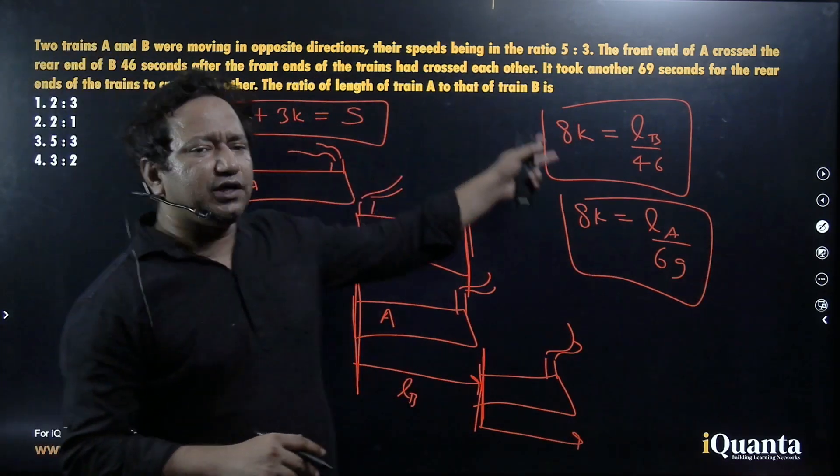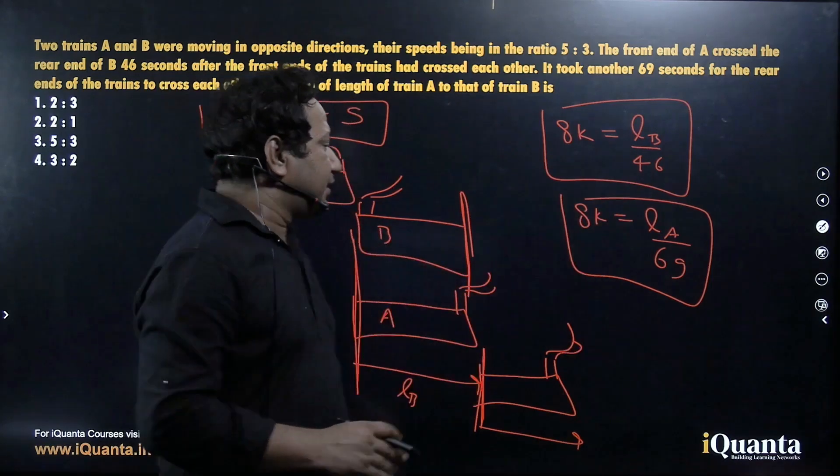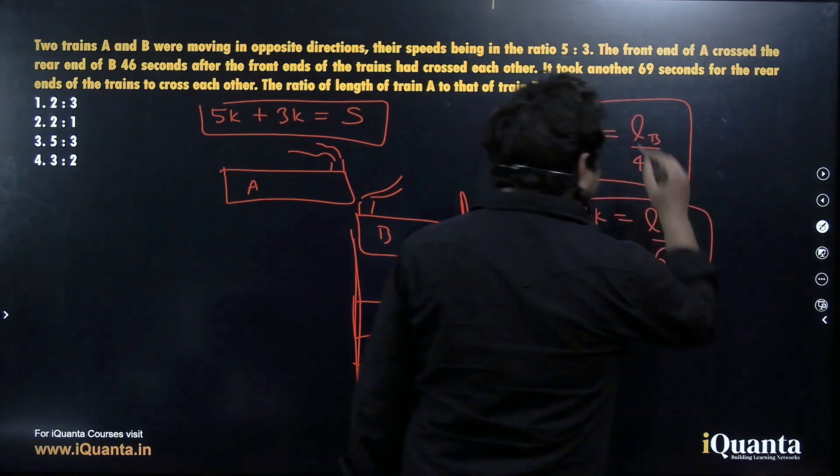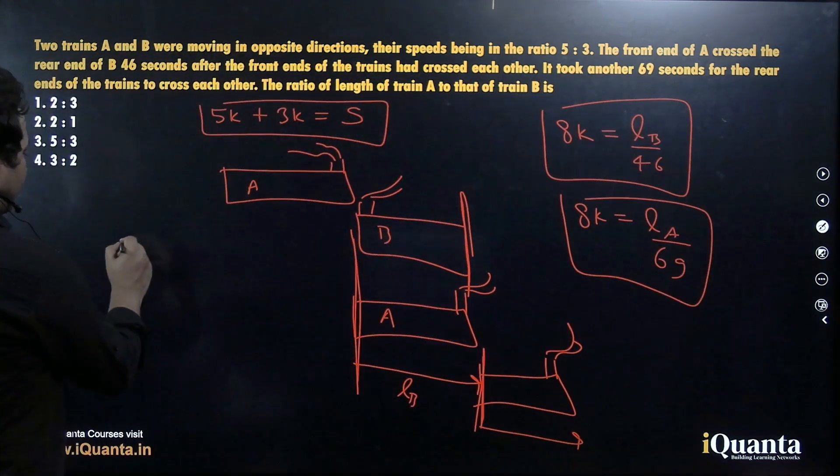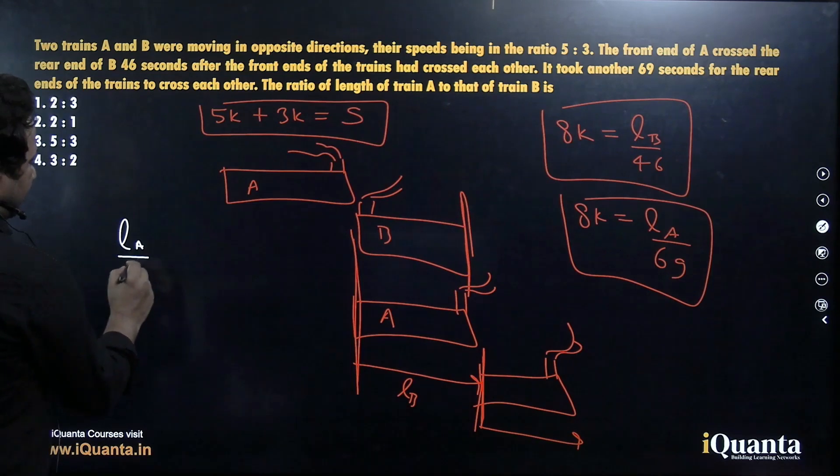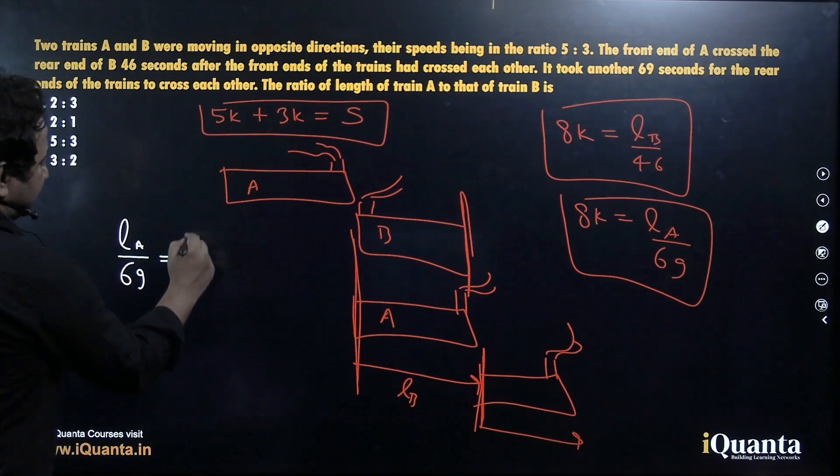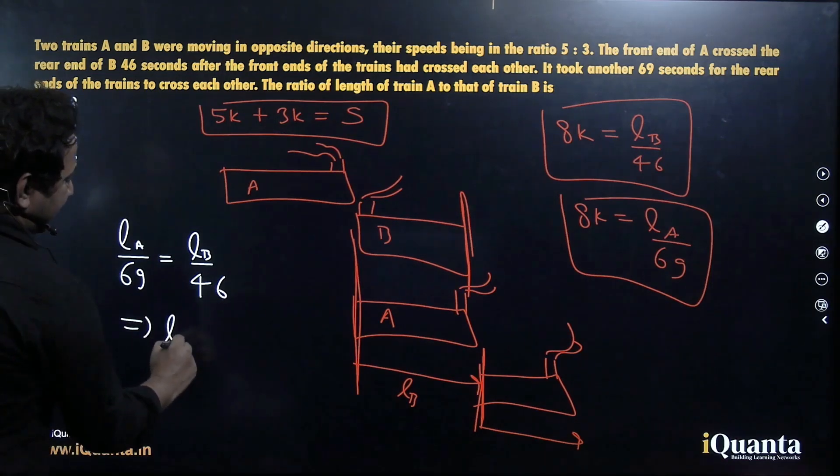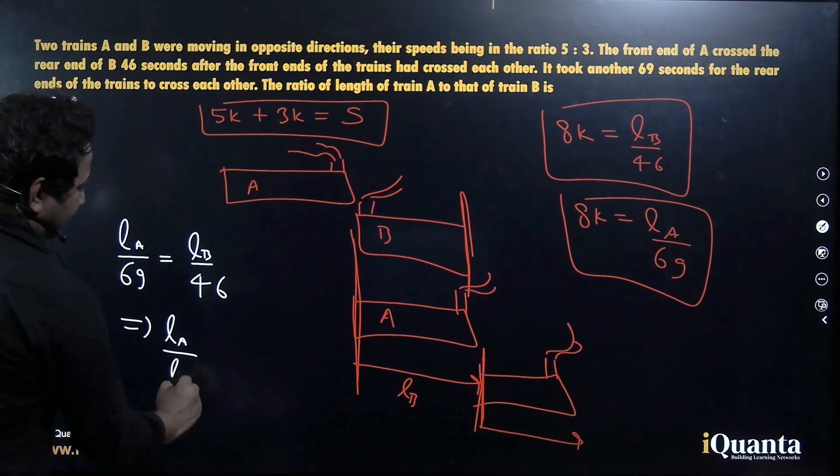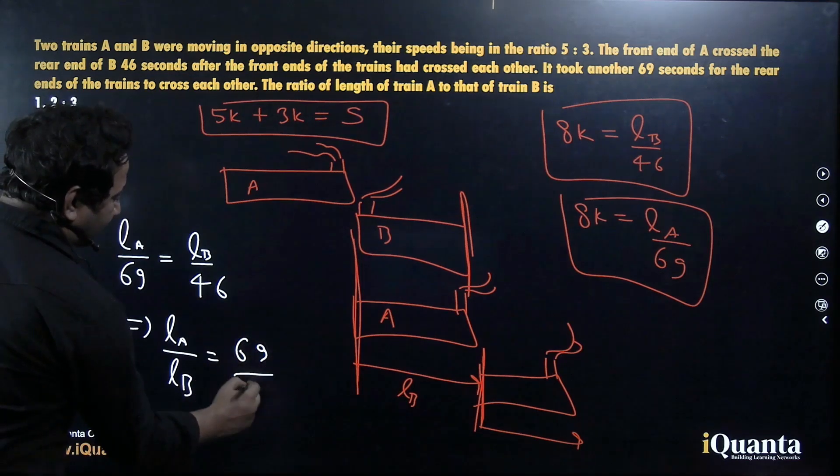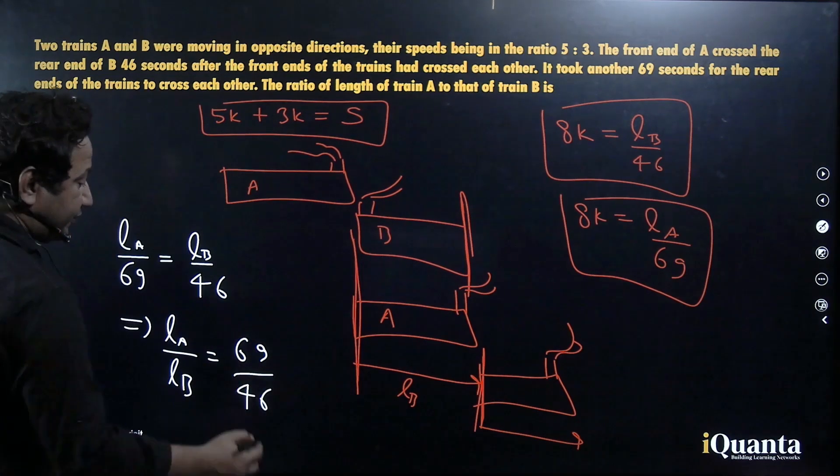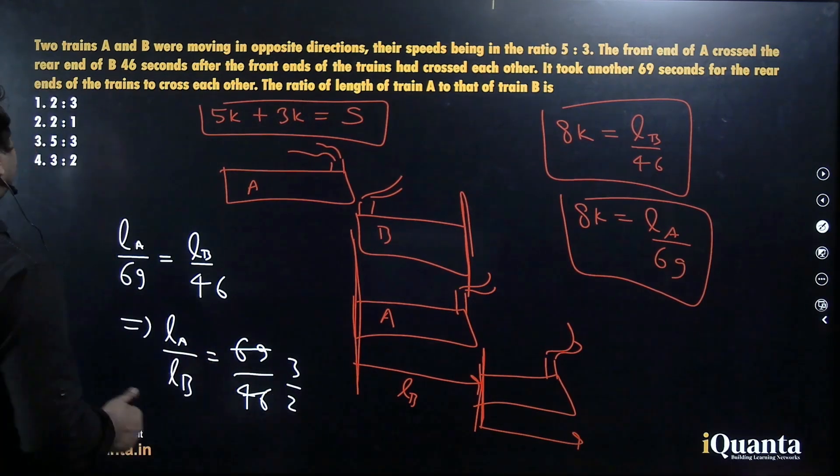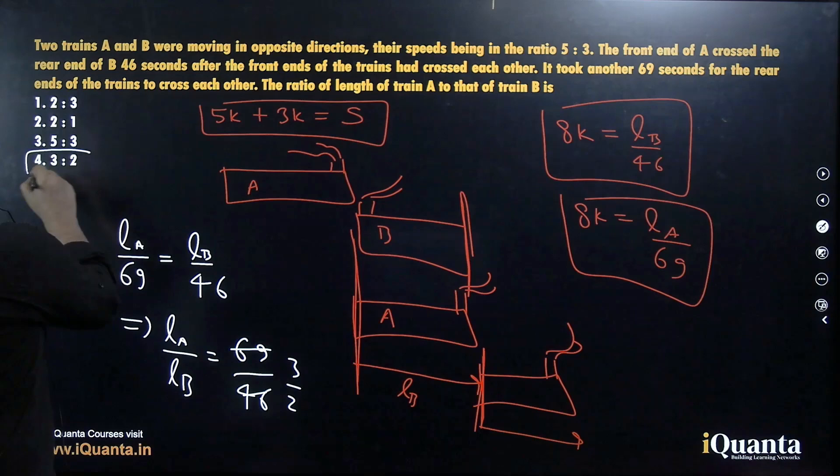As we can see, the speeds are equal, 8K. We can equate both the expressions. Equating the right hand side, LB upon 46 is LA upon 69. LA upon 69 is equal to LB upon 46. So we can say LA upon LB is equal to 69 whole upon 46. We can divide this, we get 3 is to 2. 3 is to 2 should be the ratio of length of train A to that of train B. We'll mark option 4.